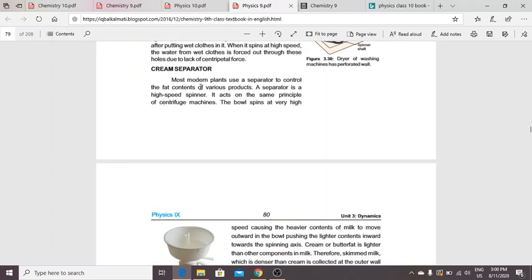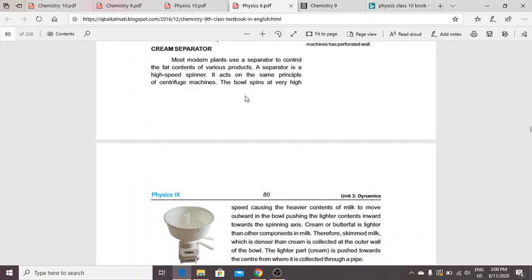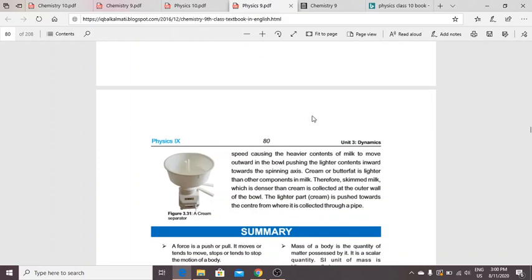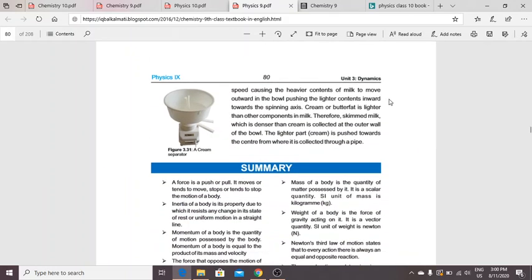Cream separator: Most modern plants use a separator to control fat components of various products. A separator is a high-speed spinner that acts on the same principle as a centrifuge machine. The bowl spins at high speed, causing the heavier contents of milk to move outward and lighter contents inward. The cream or butter fat, which is lighter, stays in the middle. Skimmed milk, which is denser than cream, moves to the outer walls.